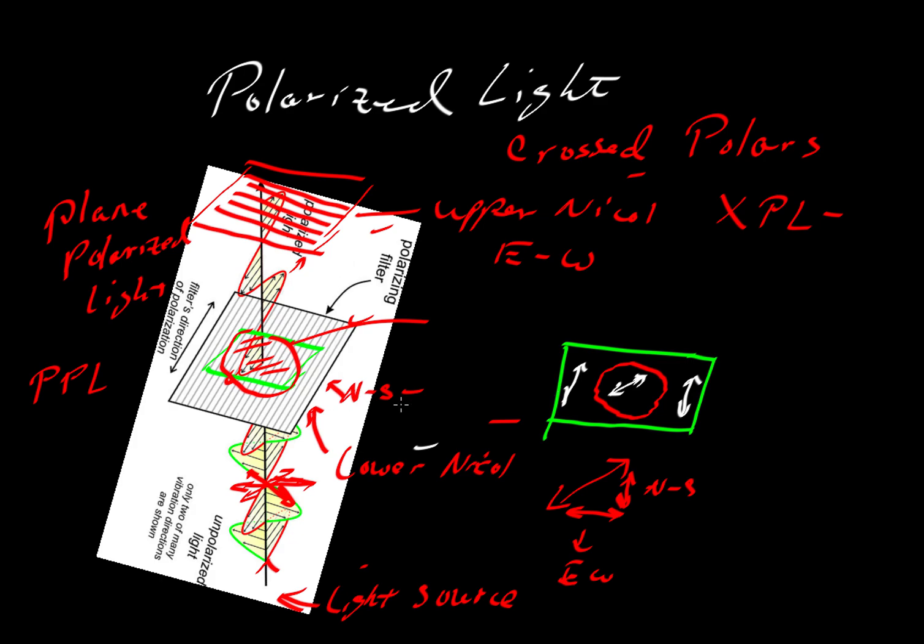So in a petrographic microscope, we have a lower nickel and then an upper nickel, and then we have what's cross-polars, or sometimes referred to also as cross-nickels. This lower nickel is always in place. That's a permanent feature of the microscope.